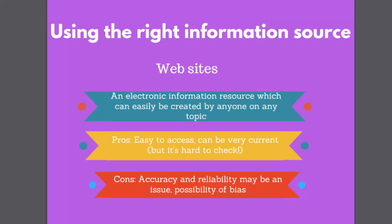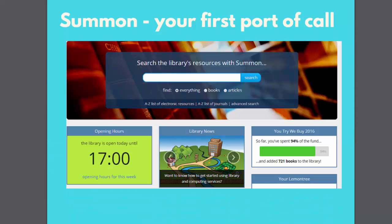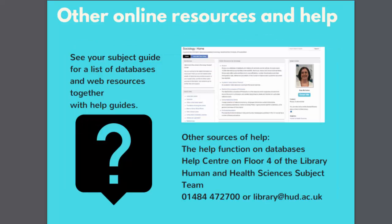These organisations are also more likely to keep their web pages up to date. So where do you find the books and articles you need for your assignments? Your first port of call will usually be Summon, which is our own search engine here at the University of Huddersfield. A separate video is available which will take you step by step through the search process on Summon. Other online resources and help are available on your subject guide — click on the Library Subject Guide link on the front page of Summon, select Human and Health Sciences and then your subject. Other sources of help include the help functions on databases, the help centre on floor 4 of the library, and the subject team who can be contacted by phone on 01484 472700 or emailed at library@hud.ac.uk.